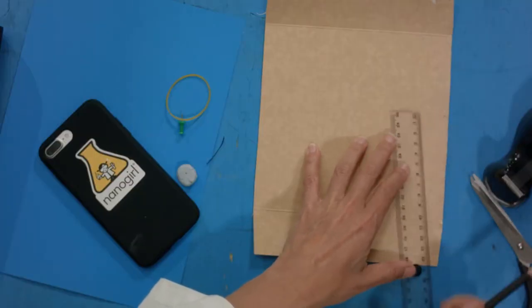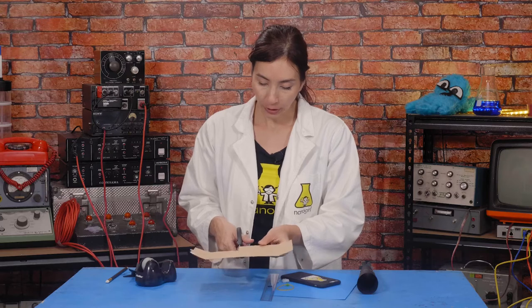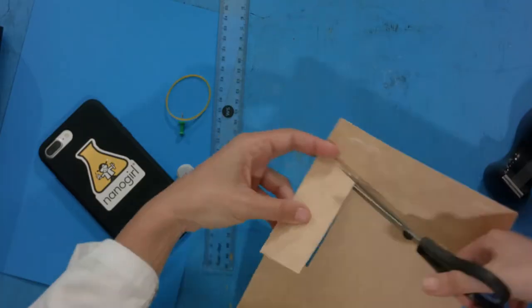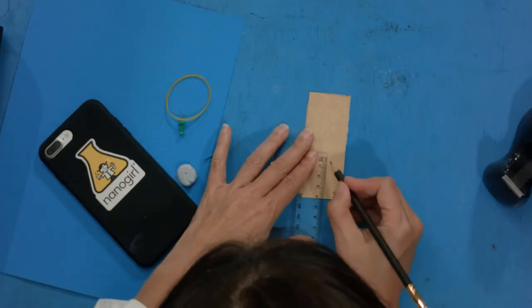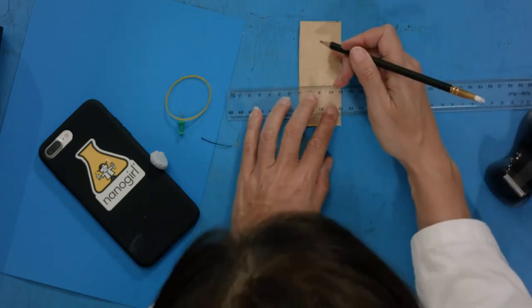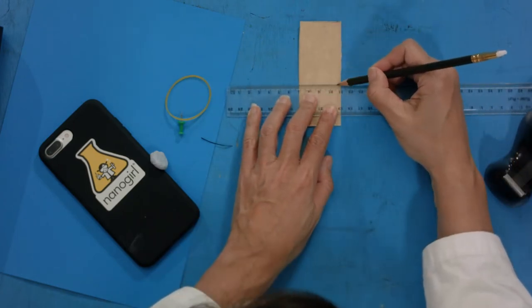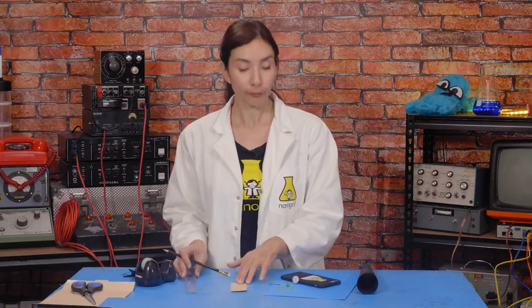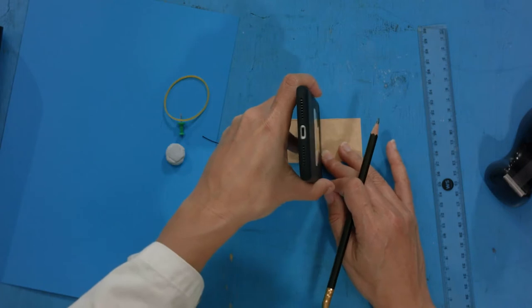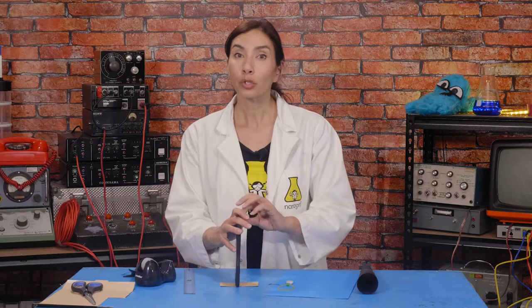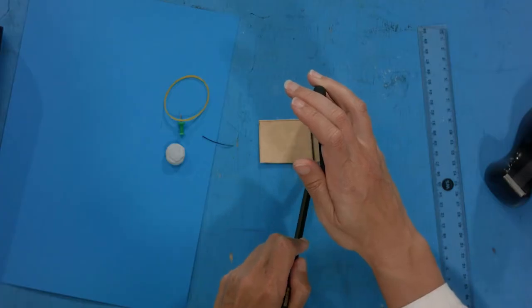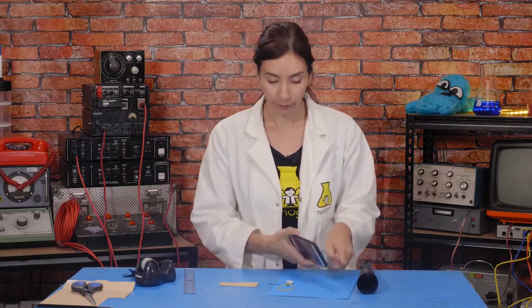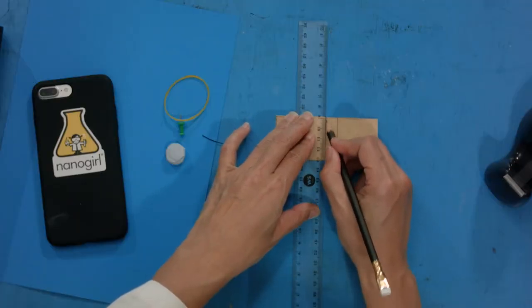Cut a strip of card 10cm long and 4cm wide. This is just card from food packaging that I got off a box. Now mark a point 4cm up from the end and draw a line horizontally across. Next lie the top of your phone or tablet so that one edge is against the line that you just drew. Now draw another line against the front of your phone or tablet and that's going to give you the thickness of the top of your phone.